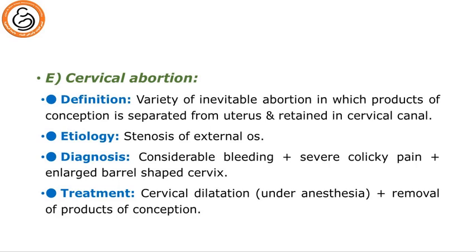Cervical abortion: by definition, a variety of inevitable abortion in which the products of conception are totally separated from the uterus and retained in the cervical canal. Etiology: stenosis of the external os — it is not dilated — and so the products of conception are hindered or accumulated above its level. Diagnosis: considerable bleeding, severe colicky pain trying to expel the contents, and the cervix is enlarged and barrel-shaped. Treatment: cervical dilatation under anesthesia and then removal of products of conception using ring forceps.